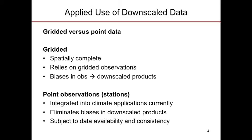Gridded data is nice because it's spatially and temporally complete. However, it does rely on gridded observations, so there's an issue with the quality of gridded data itself. If we are going to use gridded data, we should be cognizant that if there are biases in our observations, those will be carried through into our downscaled products. It's important to look at how well the core set of observations being put into downscaled datasets actually relate to real observations.